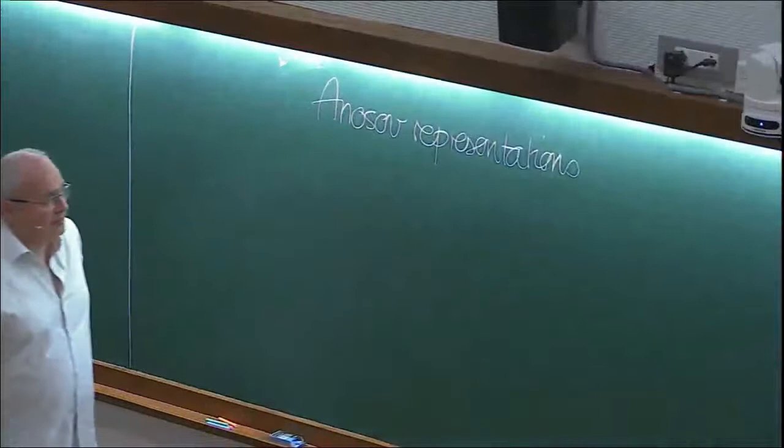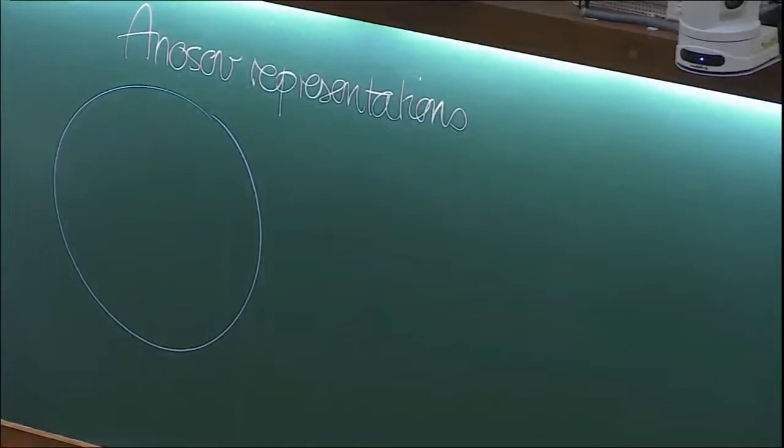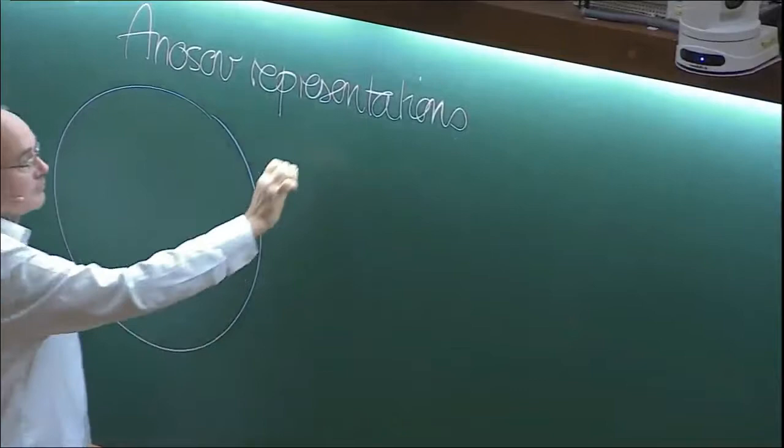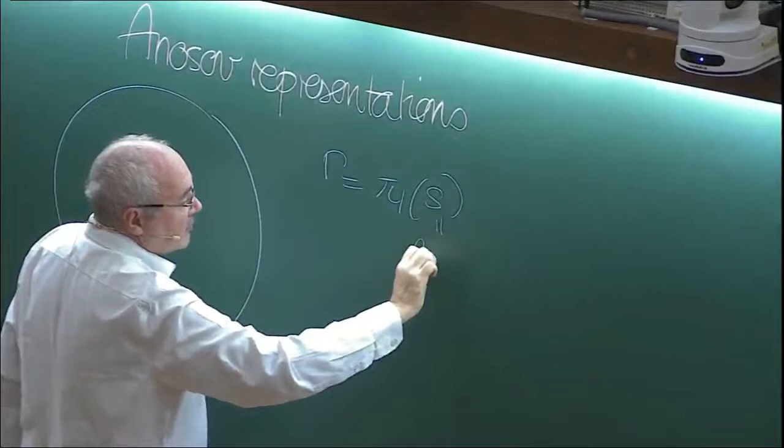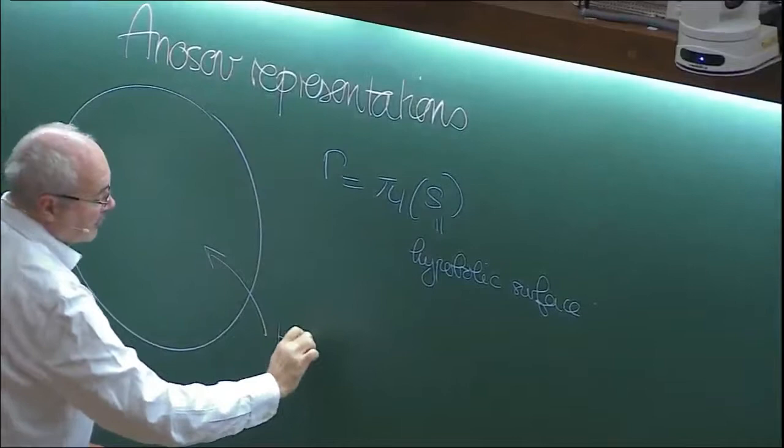I'm going to follow a very different approach from what Misha Kapovic has been doing. You can have several points of view on the subject. For instance, if you have a surface group and assume you actually have a hyperbolic surface, that's going to be H2, the hyperbolic plane, and that's going to be the boundary at infinity of H2.